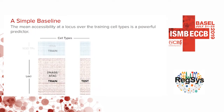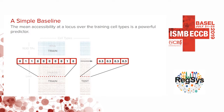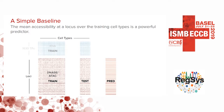A surprisingly effective simple baseline: discard RNA expression and sequence data and simply compute the mean accessibility at each locus across training cell types. For example, if 3 out of 10 training cell types show accessibility at a locus, we assign a value of 0.3 to all test cell types at that locus. This cell-type-agnostic baseline performs surprisingly well.